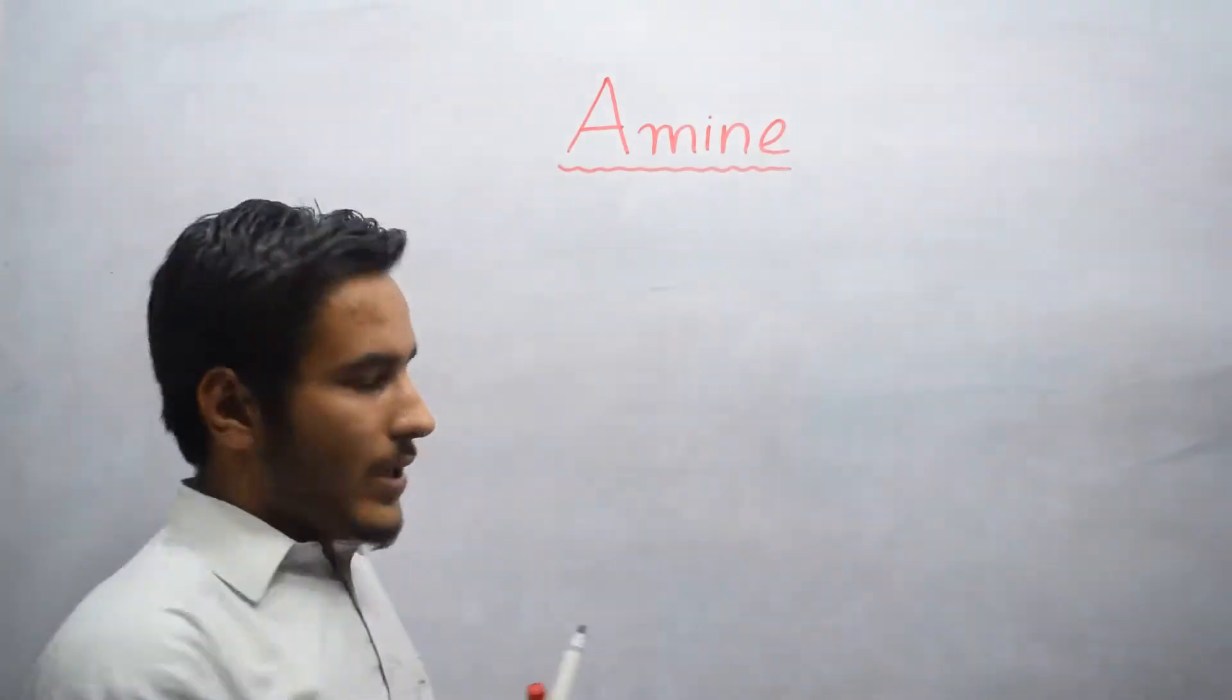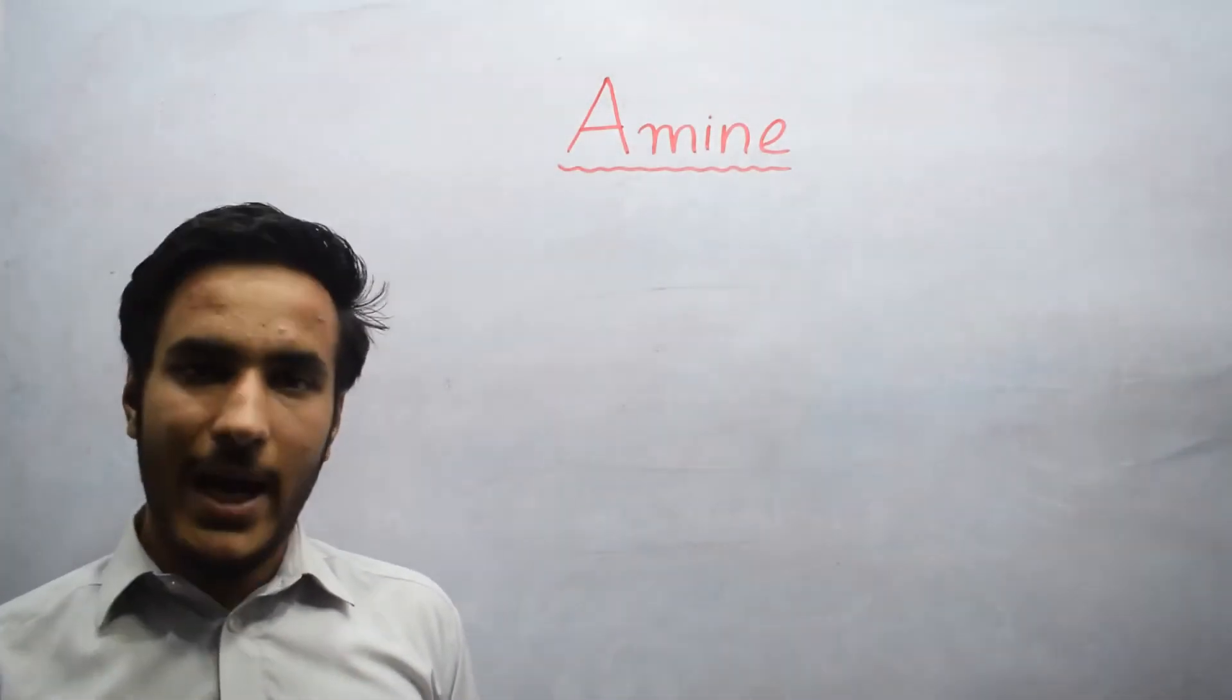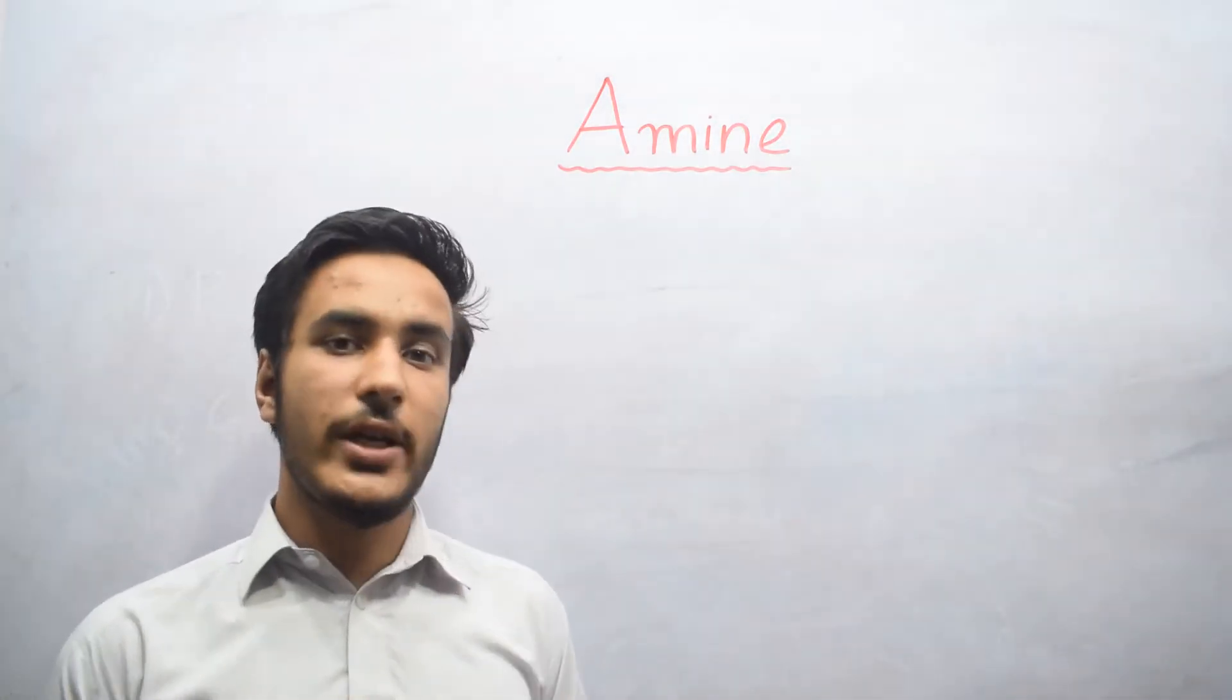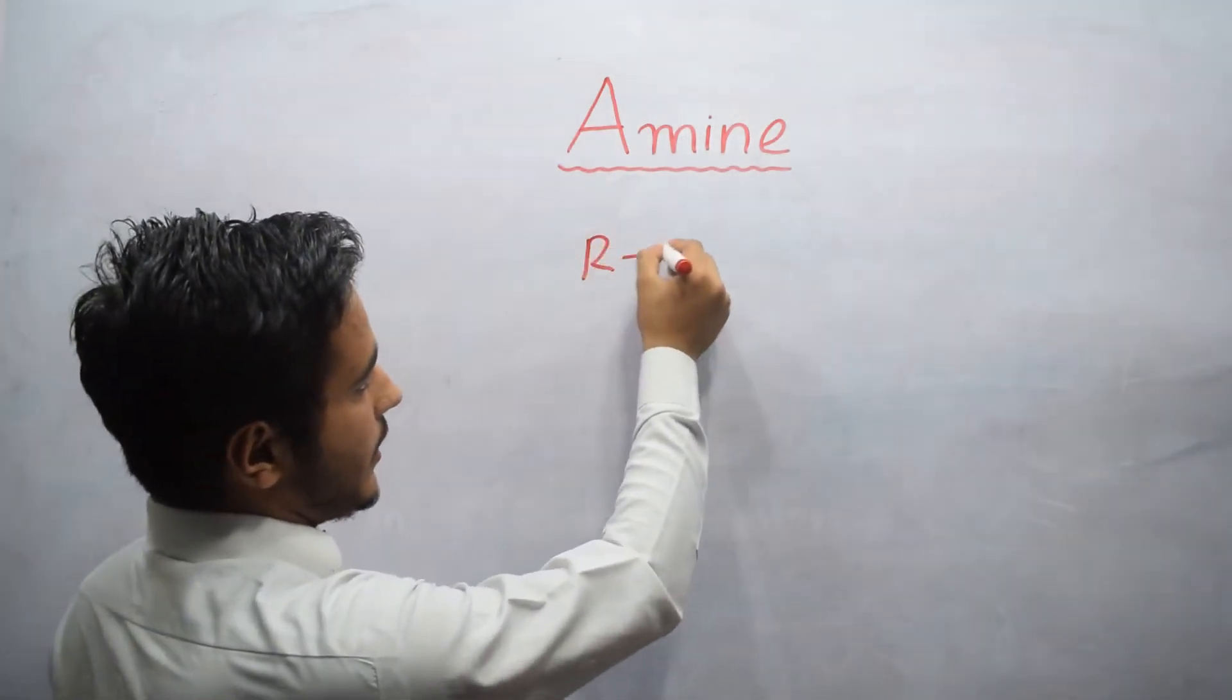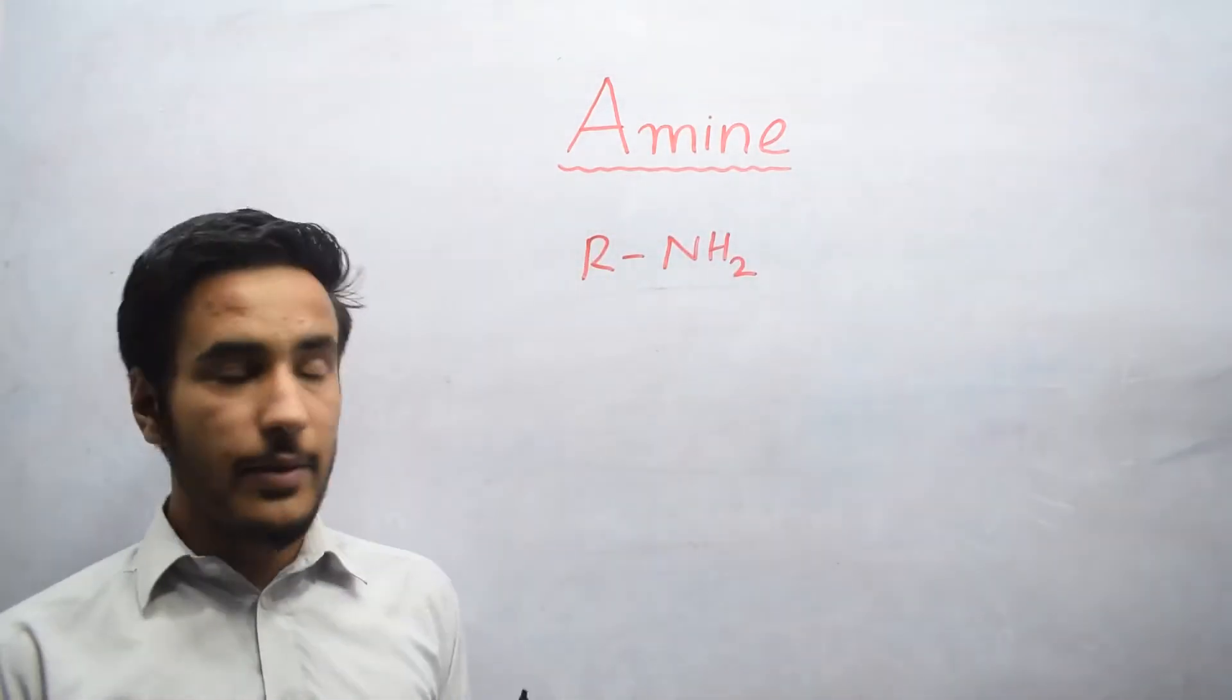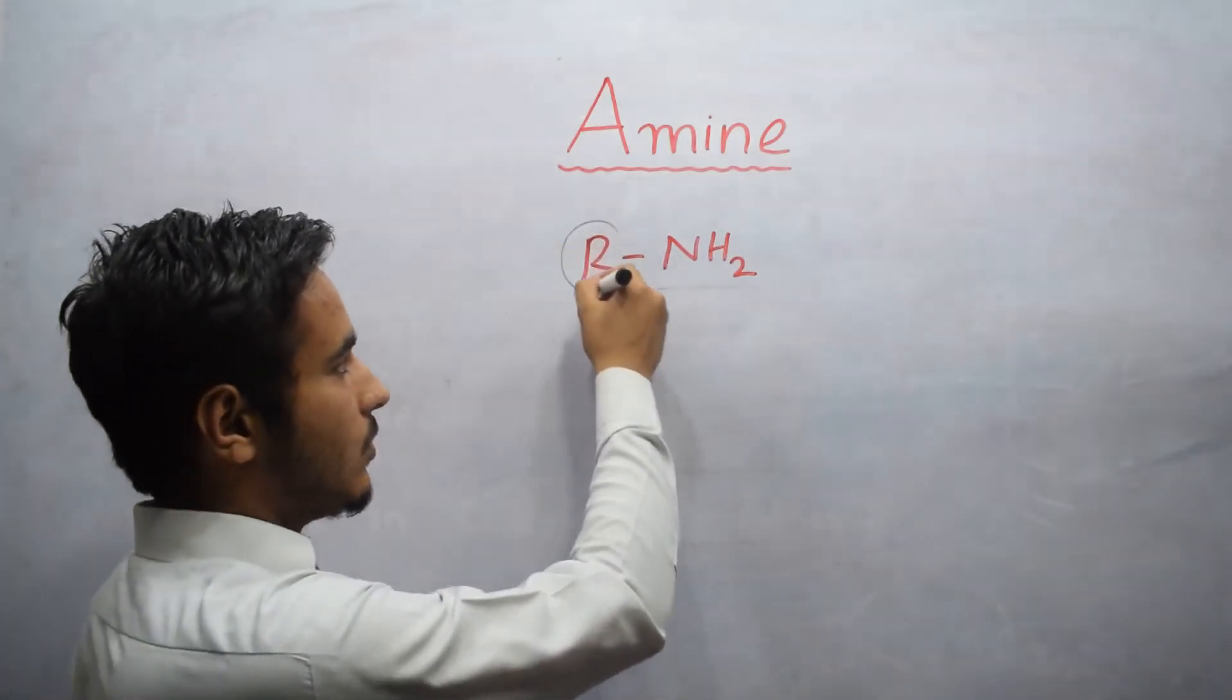Now what is Primary Amine? When we replace one Hydrogen by one Alkyl group, that is known as Primary Amine. And the general formula is R-NH2. This is basically Primary Amine. And in Primary Amine, there must always be one Alkyl group.